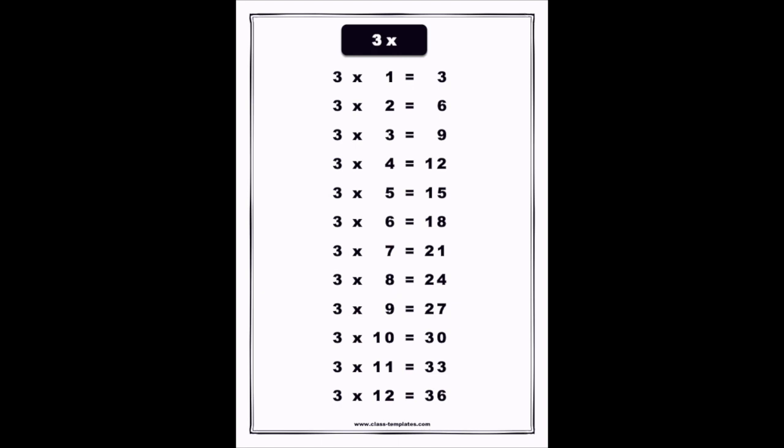One three is three, and two threes are six. Three threes are nine, four threes are twelve, five threes are fifteen, and six threes are eighteen.